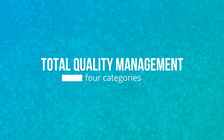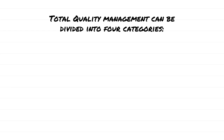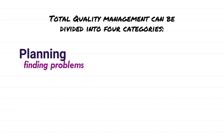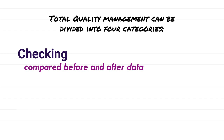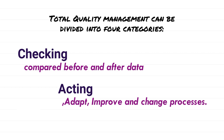So, Total Quality Management has four phases. The first is the Planning phase, where they try to find out the problems and queries which need to be addressed. Then comes the Doing phase, where they find solutions to get rid of those problems. Then comes the Checking phase, where they compare before and after data to confirm the effectiveness of the process. Then comes the Acting phase, where they recognize, communicate, and revise the process.